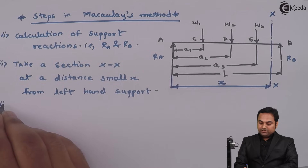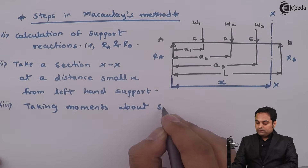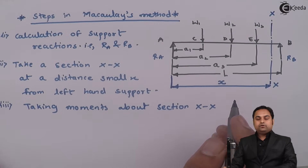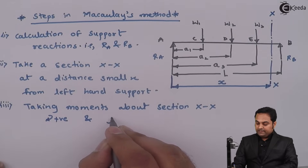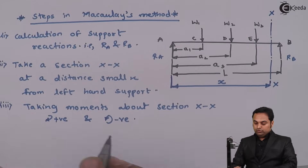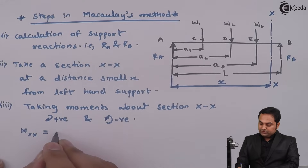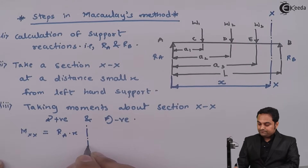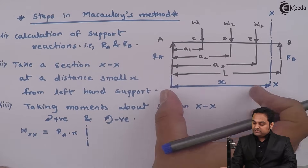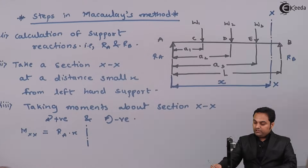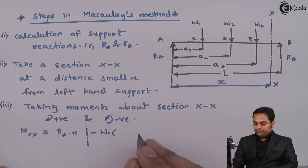When using Macaulay's method, the first thing is taking moments about section X-X. Whatever clockwise moments we treat as positive and anti-clockwise moments as negative. So moment at X-X equals RA·x (clockwise, positive). W1 produces an anti-clockwise moment; the distance between section X-X and W1 is x minus a1, so that term is minus W1 into (x minus a1).